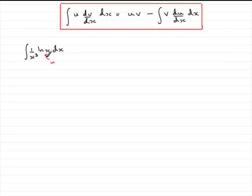So, if that's u, then the other part here, 1 over x cubed in this example, is the dv by dx, alright?